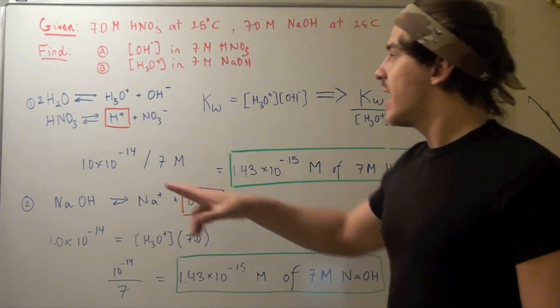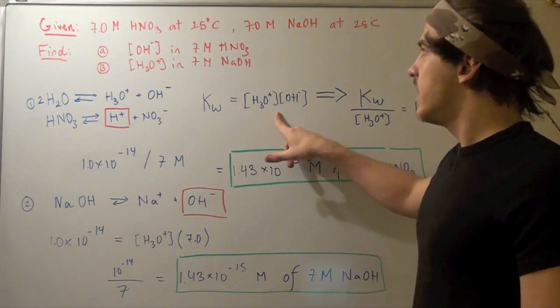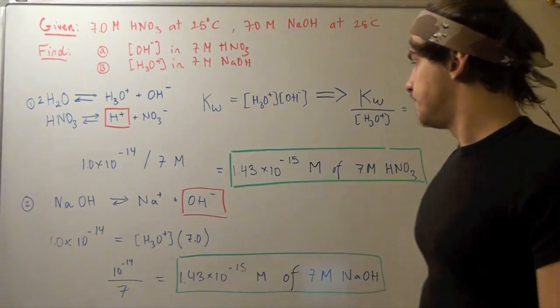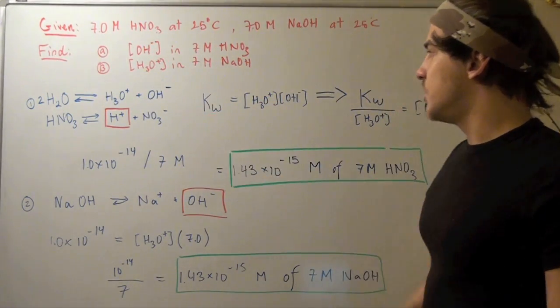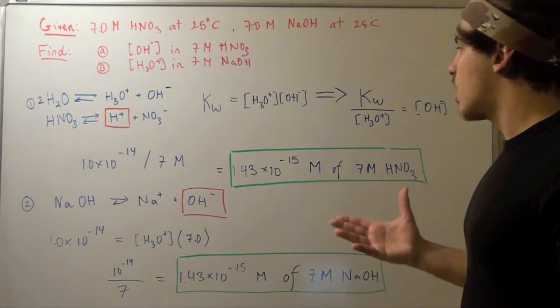Our concentration of hydronium in our solution is 7 molar. We know KW and we know this. Now, we could plug it in and find our result.